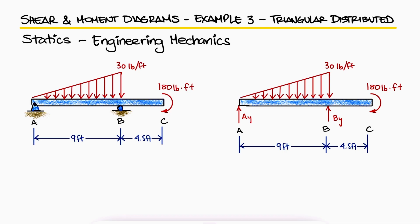A triangular load that goes from 0 to 30 pounds per foot has an average of 15 pounds per foot over a length of 9 feet.